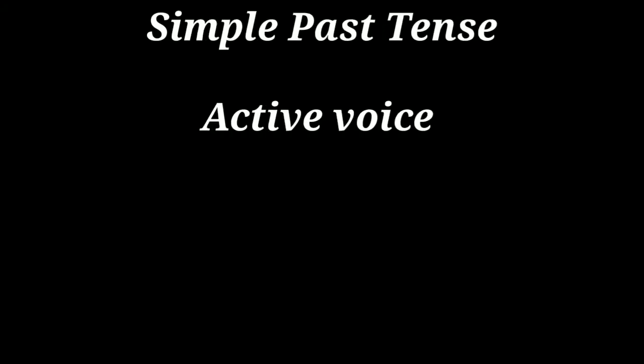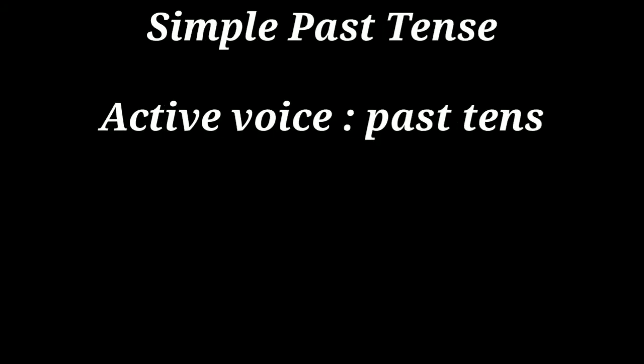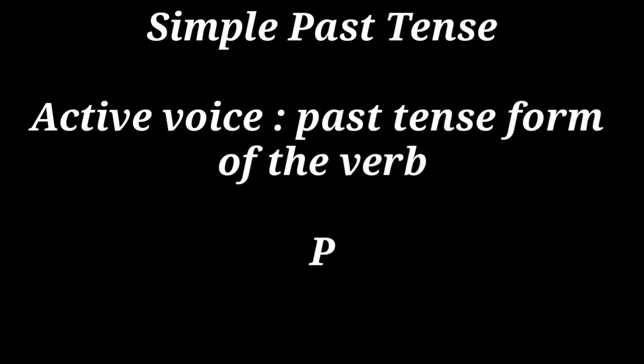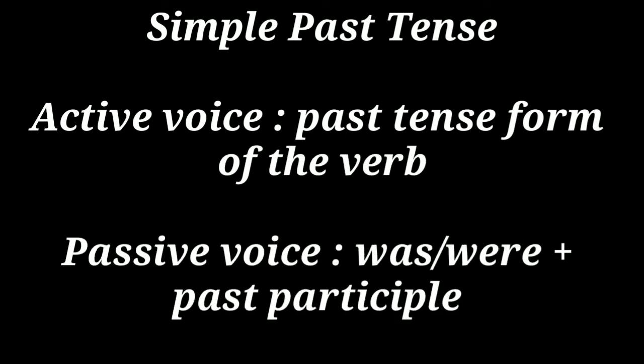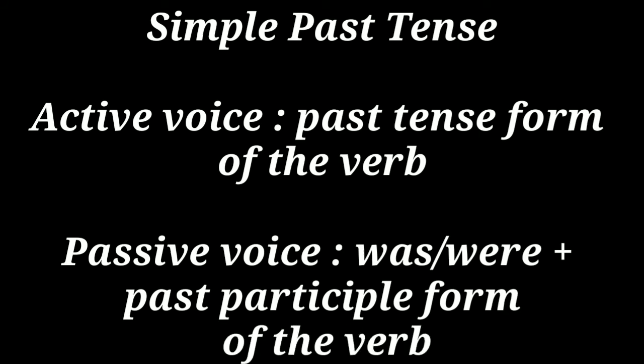In simple past tense, in active voice we use the past tense form of the verb. For example: 'wrote' — 'Reetha wrote a story.' In passive voice we write 'was' or 'were' and the past participle form of the verb. 'Reetha wrote a story' in active can be changed into 'A story was written by Reetha' in passive.